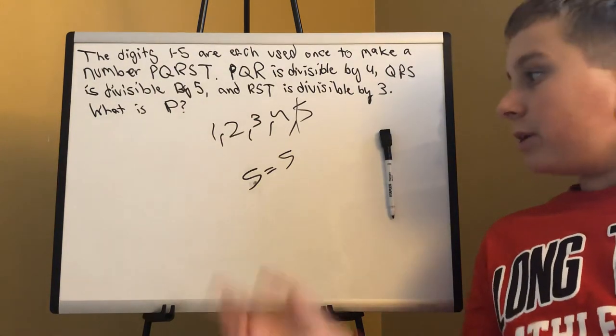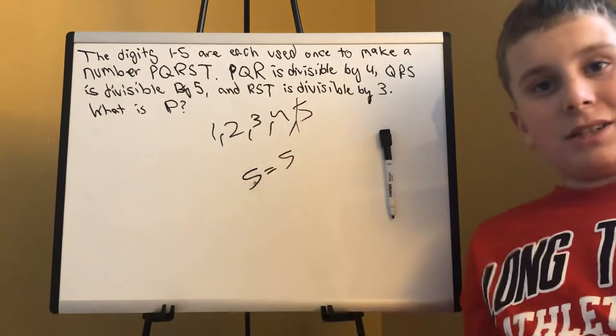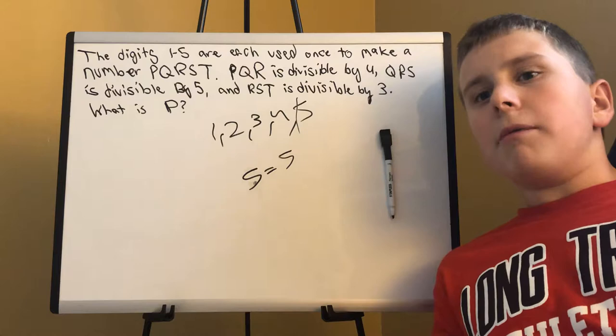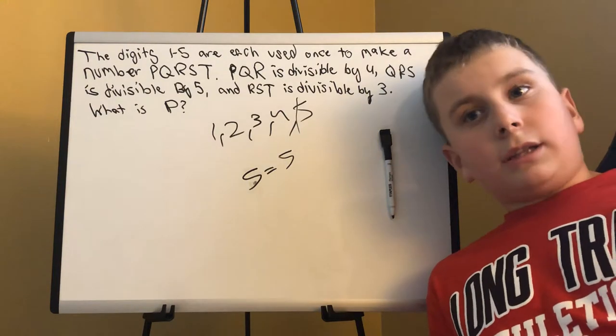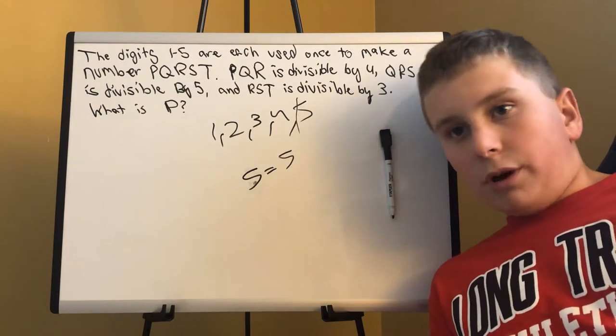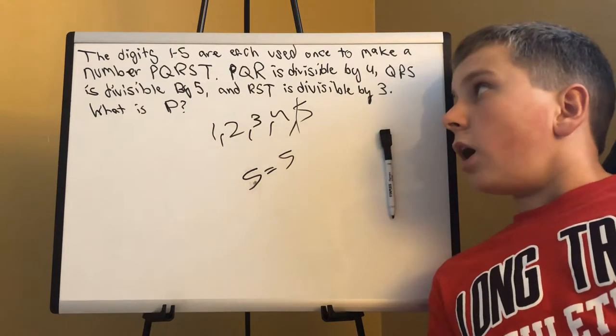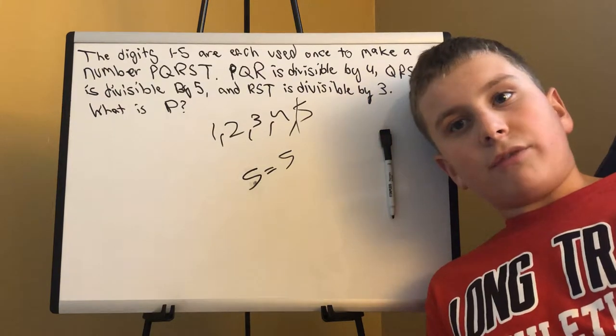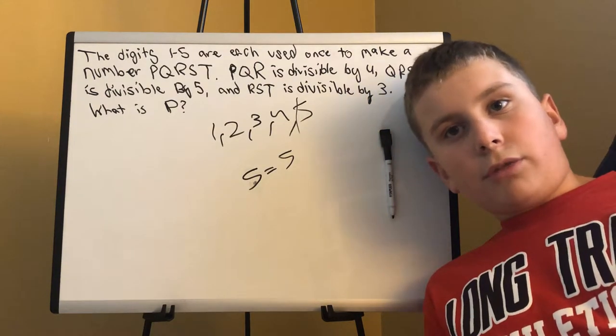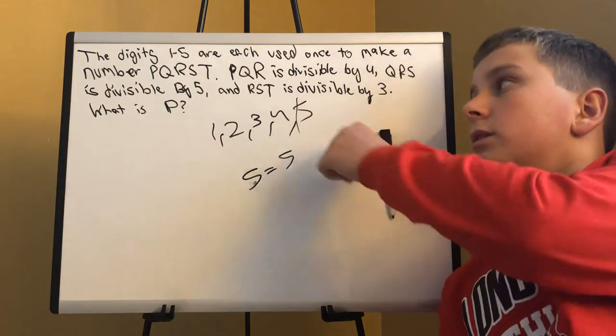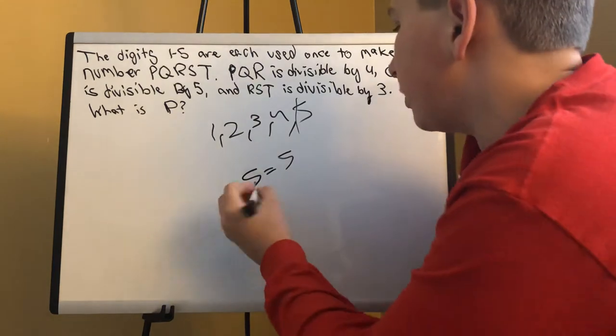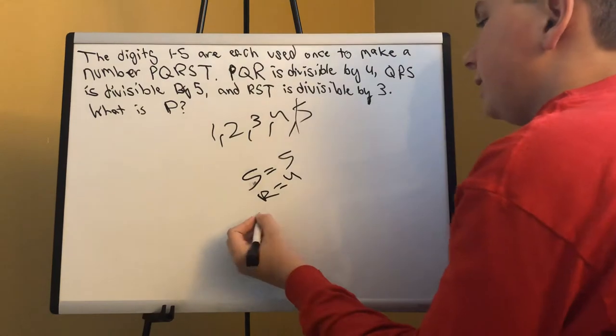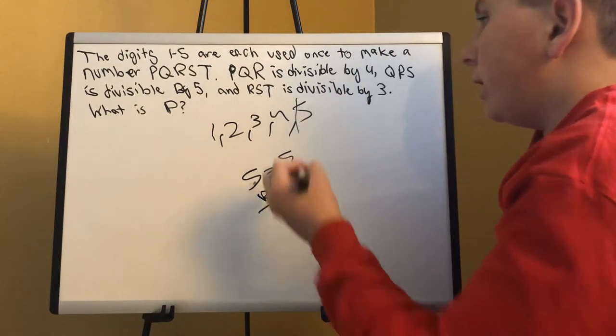If R is 4, then 453 would be divisible by 3. And 453 is totally legit because this 3 hasn't been used yet. So here we see R equals 4, and then T equals 3. Epic.